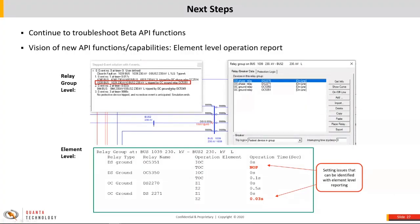For example, regarding the step event analysis: if you haven't used this functionality in one-liner before, the current version generates a string-formatted report at the relay group level — it tells you that on this relay group, this OC ground relay OC 5351 operated. In our vision, we hope the future will have a more detailed element-level report. For instance, issues at the relay group level can be hidden: the IOC operated immediately, but the TOC does not operate because the pickup is set too high and it can't even see a closing fault, or a zone 2 element timer is set too short so it operates right after zero seconds.